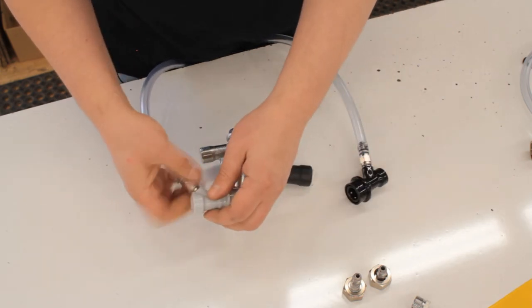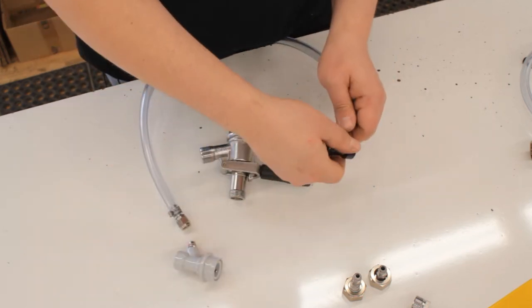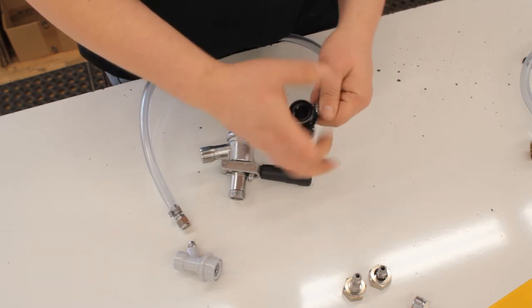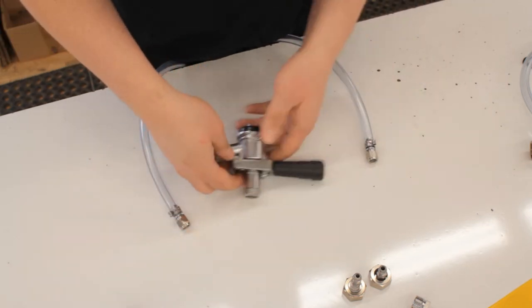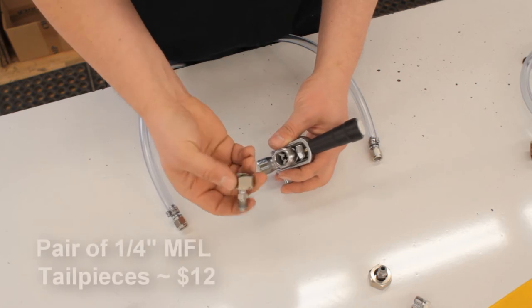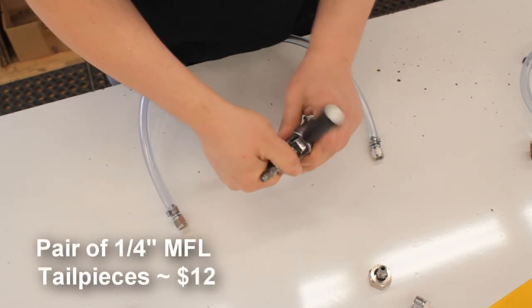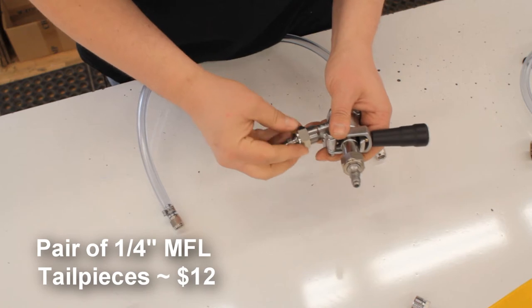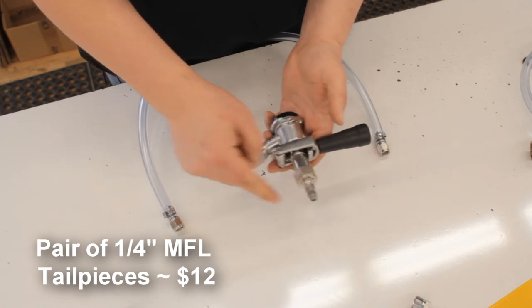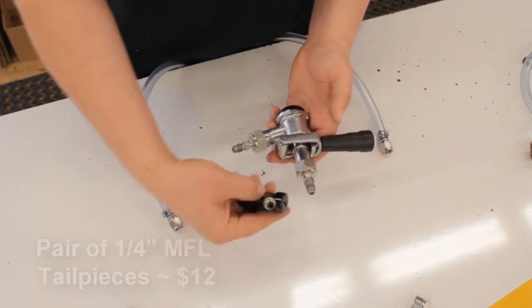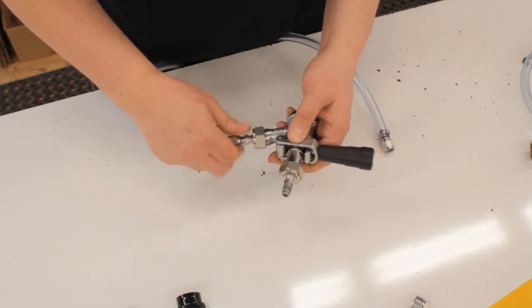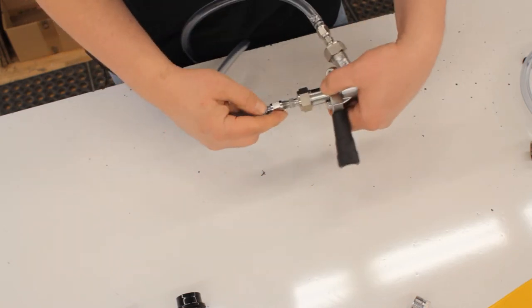When you want to dispense commercial kegs, you'll remove your ball lock connectors and set those aside, and then you just have to equip your commercial coupler with these special tail pieces that also have male flare on them. So these get threaded onto your coupling, and now you have male flare on both the gas in and the beer out. Your hoses are already equipped with the female flare version and that threads on there.